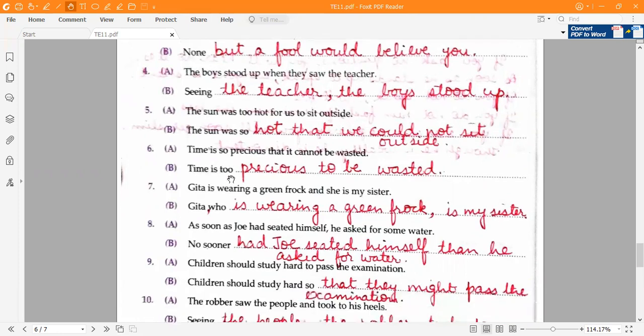Fifth one, the sun was too hot for us to sit outside. The sun was so hot that we could not sit outside. Time is so precious that it cannot be wasted. Time is too precious to be wasted.